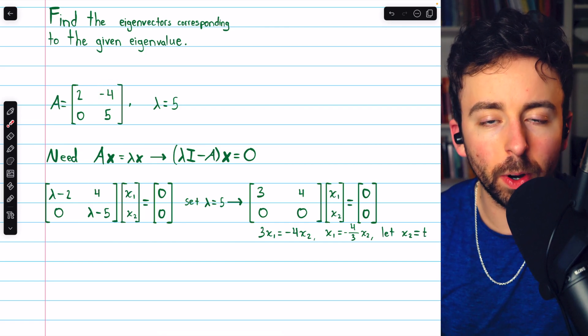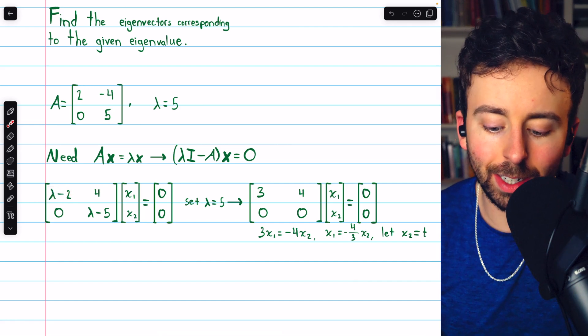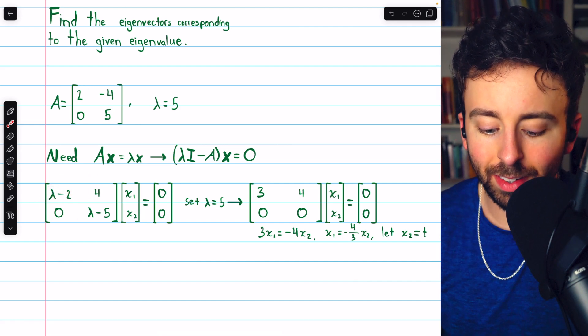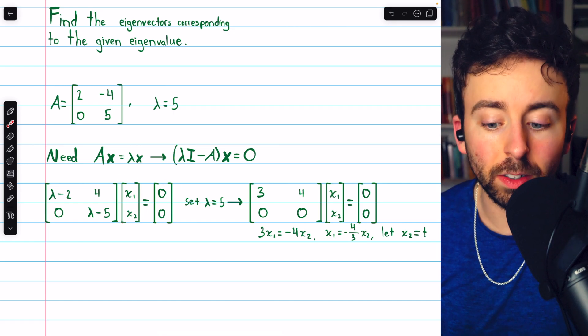So instead of negative four, we have positive four. On the diagonal here, instead of two, we have lambda minus two. And this matrix times this vector must equal the zero vector.